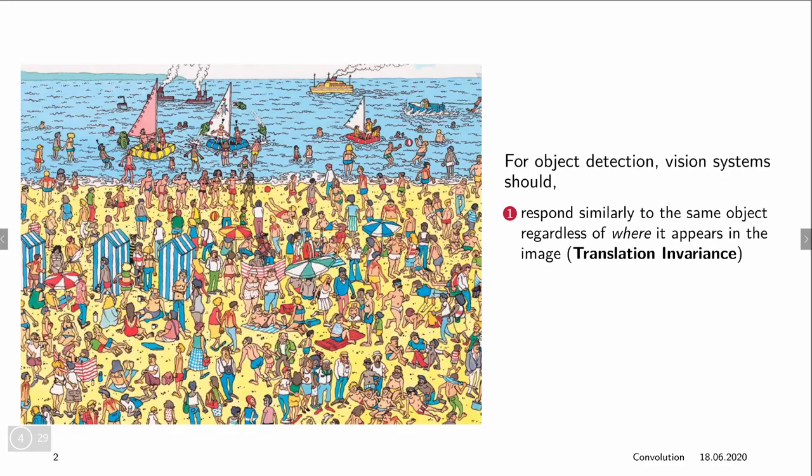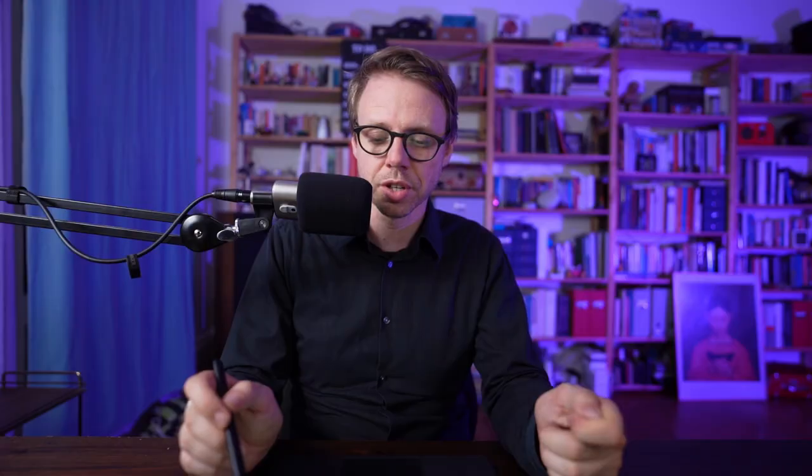The problem that we are talking about is object detection, and these computer vision systems for object detection should respond similarly to the same object. Say, we find a person that looks very similar to Waldo in one part of the image, and another person who looks similar to Waldo in another part of an image. So we want our model to be translation invariant.